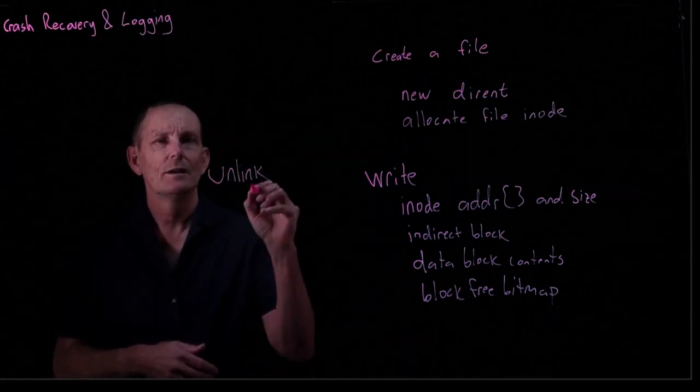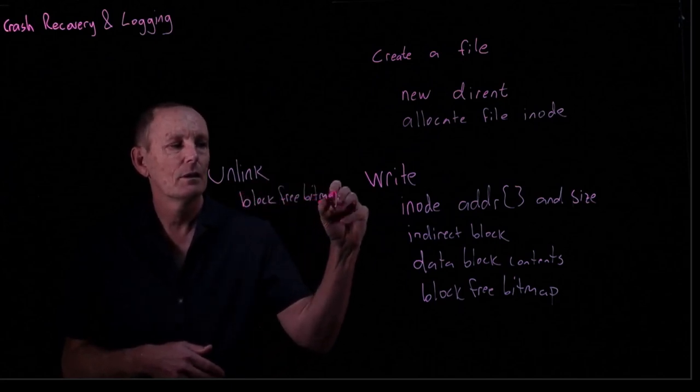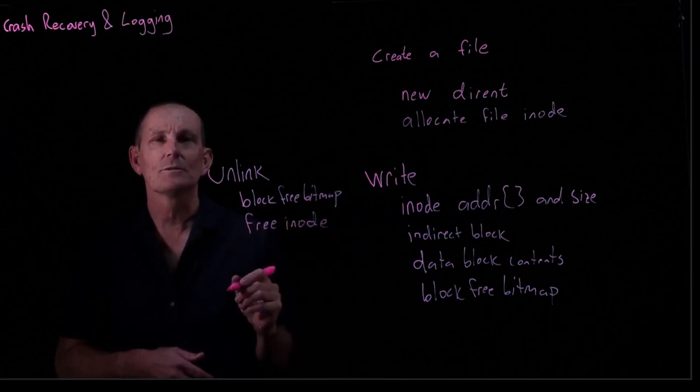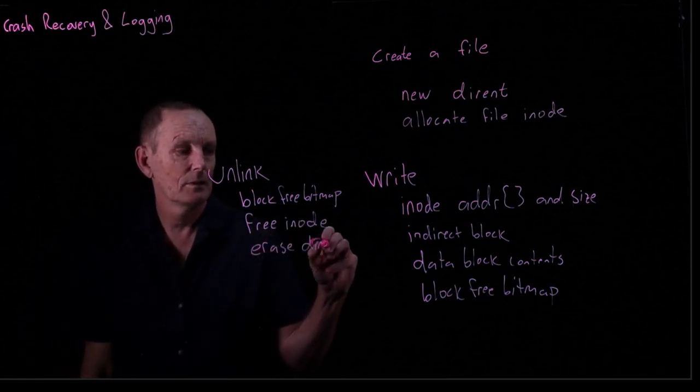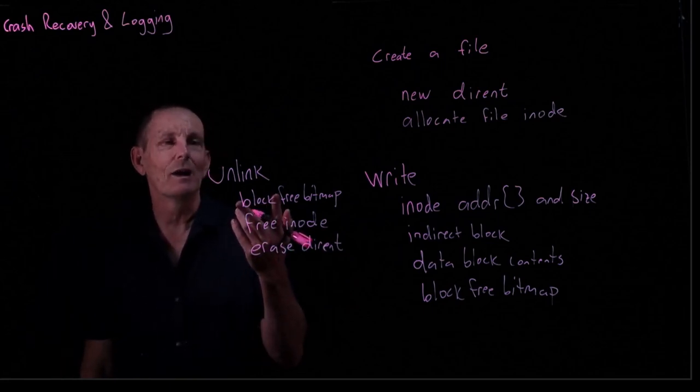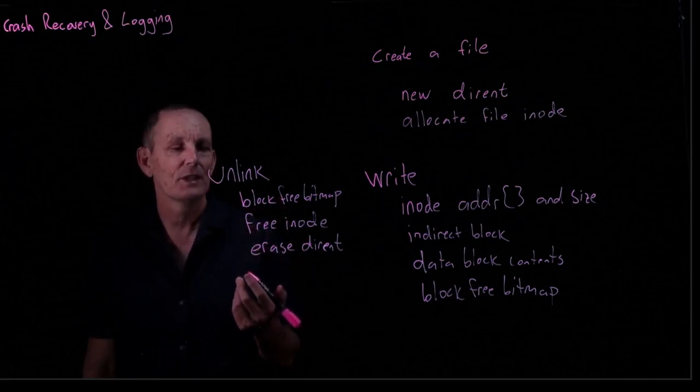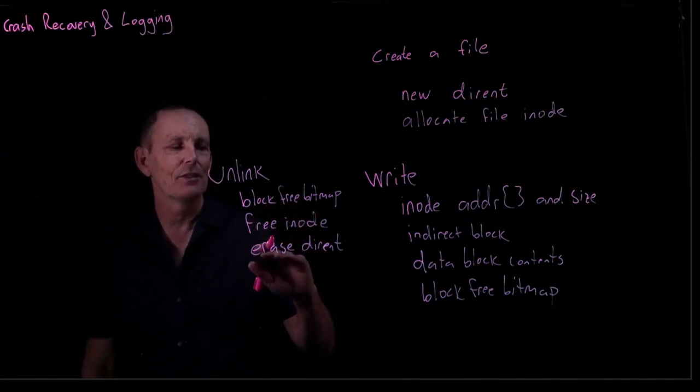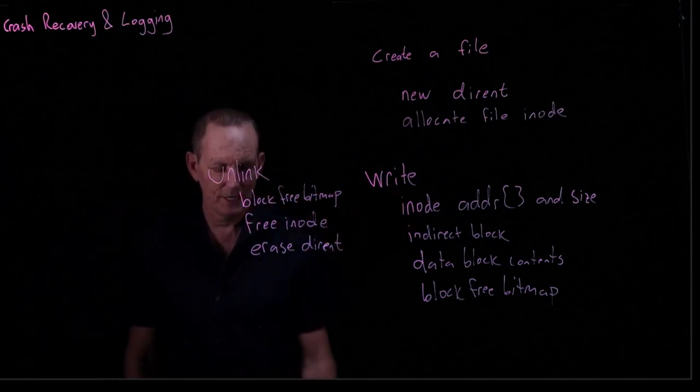Let's look at another example, unlink. So in an unlink, what do we have to update? The block-free bitmap. We have to free the inode, assuming that this was the last link. We have to erase the directory entry. The reason in which this goes bad, probably the worst way, is when we have marked it as free and yet it's actually still in use by the inode and the directory entry. Or what would be bad is if these first two happened and the third one doesn't happen. Ideally, we'd really like these to be all or nothing, in some sort of a transaction.